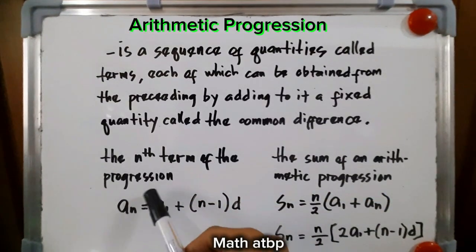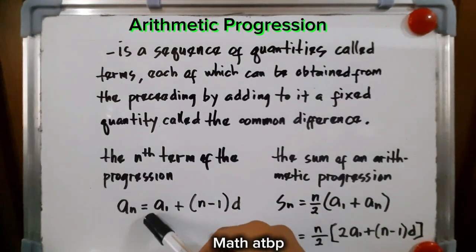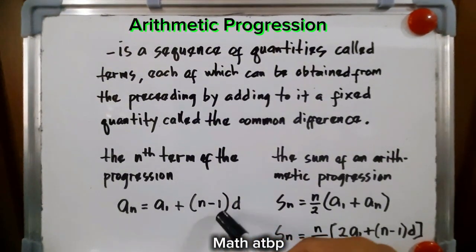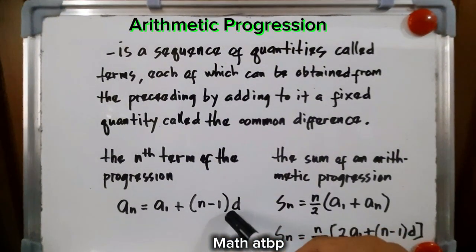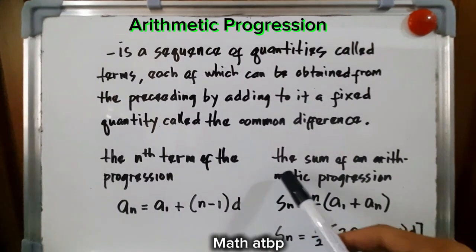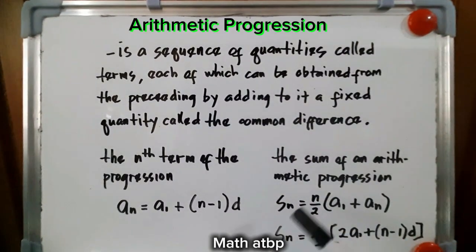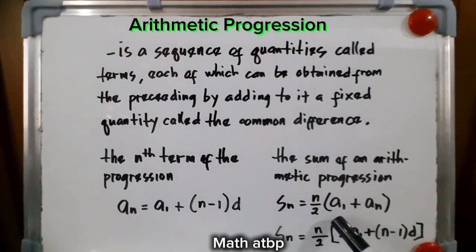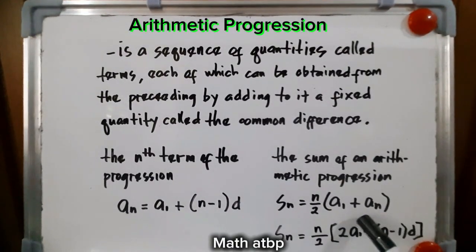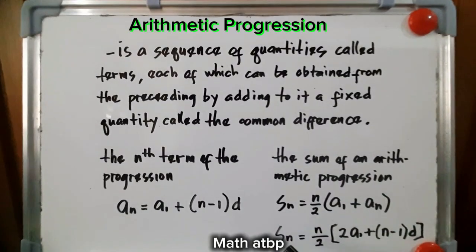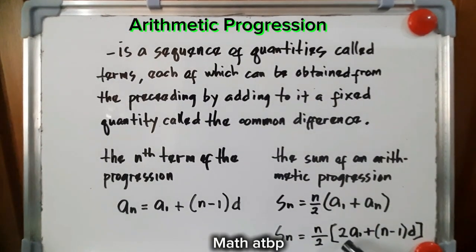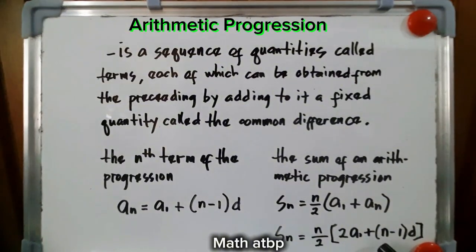The nth term of the progression, a sub n, is equal to the first term a sub 1 plus the quantity n minus 1 times the common difference. And the sum of an arithmetic progression, s sub n, is equal to n over 2 times the quantity a sub 1 plus a sub n. Or, an alternate formula, it is n over 2 times the quantity 2a1 plus the quantity n minus 1 times d.